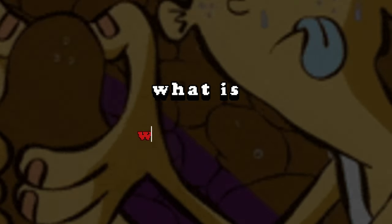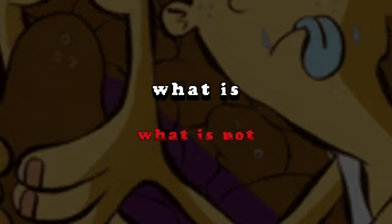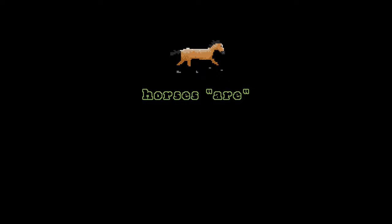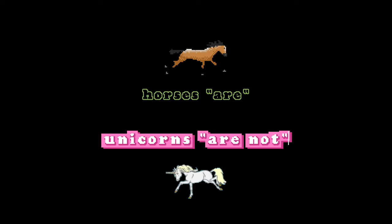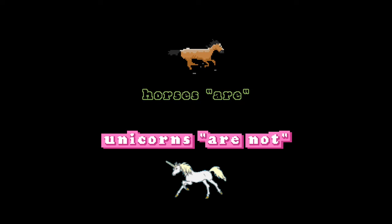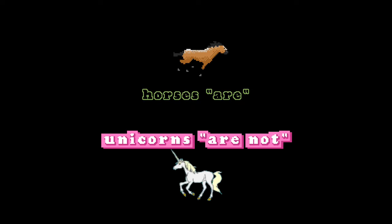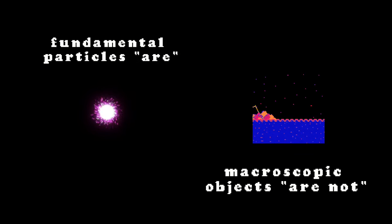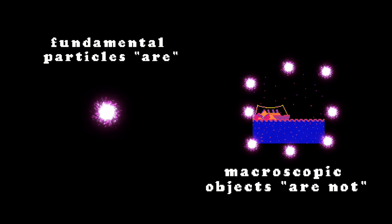Ontology generally deals with what is, as distinct from what is not. One might say that horses are, but mythical creatures like unicorns are not. One could argue that only fundamental particles truly exist, while macroscopic objects like mountains or oceans are merely convenient descriptions of particle arrangements, lacking independent existence.